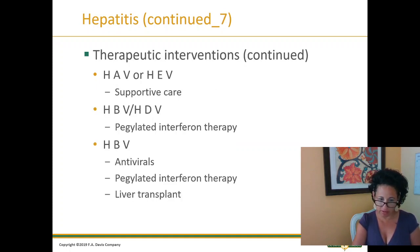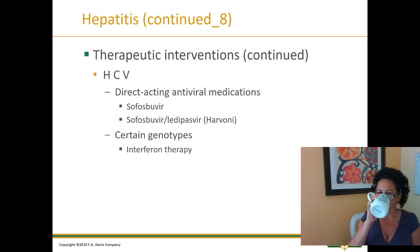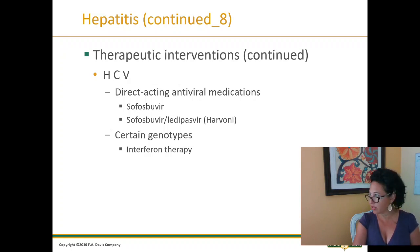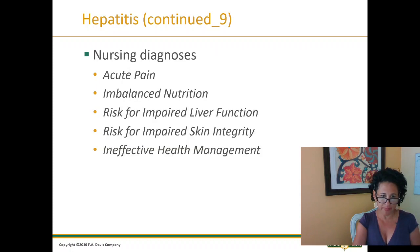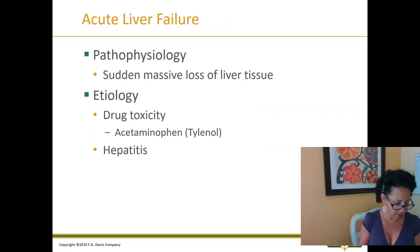Additional therapeutic interventions include antivirals and, if the patient is in good enough shape, liver transplant. You cannot be an active alcoholic or drug addict to qualify for a transplant — there are specific criteria. Here are nursing diagnosis options.